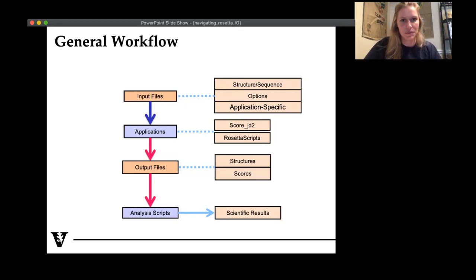So the general workflow will look something like this. You have your input files, and this can consist of a structure or a starting sequence. And you give it some options. Some of these are application specific. And then you're going to actually run it through an application. So a couple examples of this, two very commonly used ones are score_jd2, which simply scores a given protein structure, and Rosetta scripts, which you all will hear much more about over the course of the next couple of days. So you run it through this application, and you get some output files. This can either look like a set of other structures, and you also can get scores. And we'll look at a couple of these outputs as well in this talk. And then you run it through the appropriate analysis. And this can feed into understanding the scientific results of this run, which then you can go and test experimentally in the wet lab.